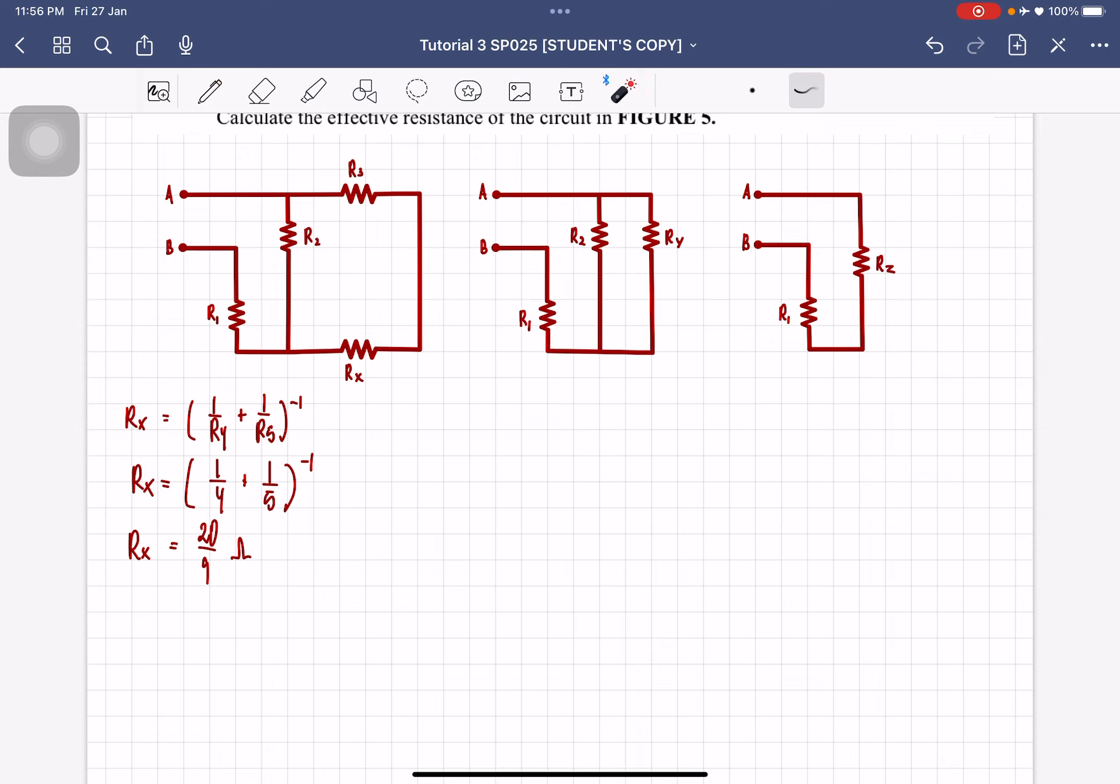So after combining resistor number 4 and 5, we've obtained Rx. So the diagram becomes like this, the circuit is now in this connection here. So now we can combine R3 and Rx, so this is basically gonna be Ry. So Ry is equal to, this is in series, so you just have to add them together. So R3 plus Rx, which is equal to 3 plus 20 over 9, which will then give you 47 over 9 ohms.